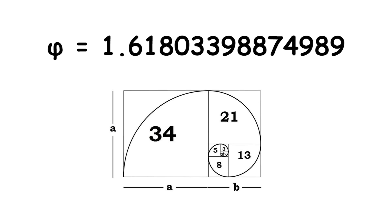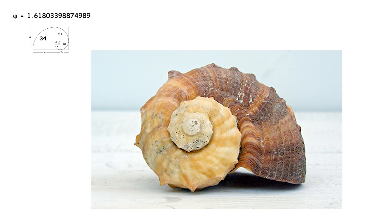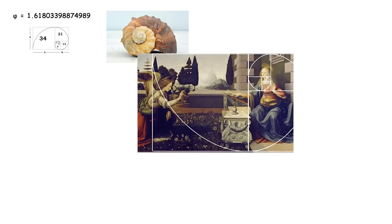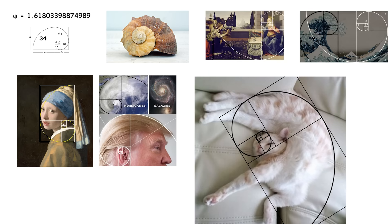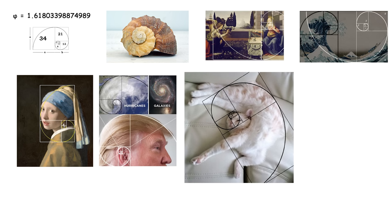This unique ratio has been observed in many natural phenomena, from the spiral patterns of seashells to the branching of trees. It is also widely used in art, architecture, and design, as the golden ratio is often considered to be an aesthetically pleasing proportion.